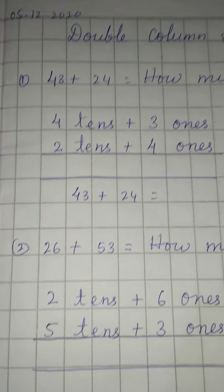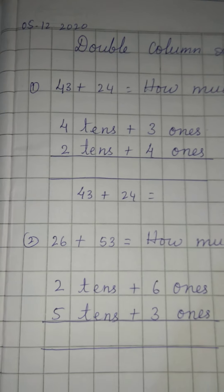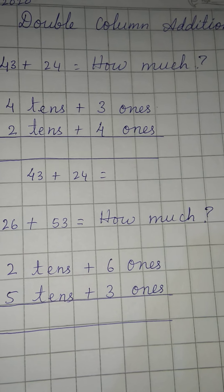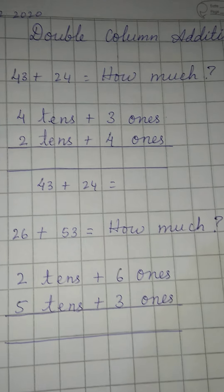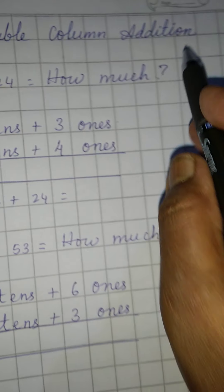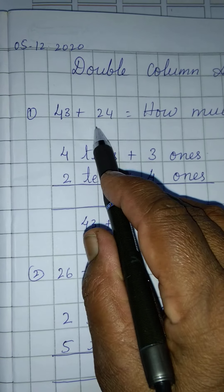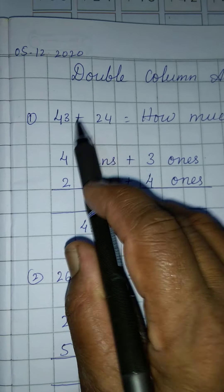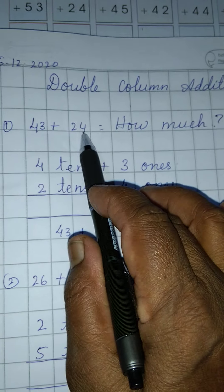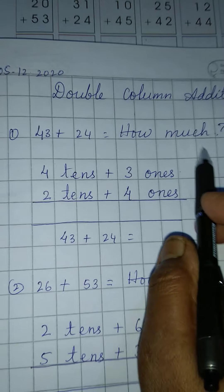Hello children. In maths today I am going to explain double column addition. See children, 43 plus 24 — how much? 43 plus 24 is equal to how much?